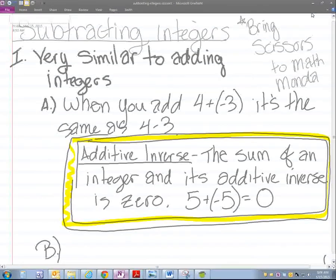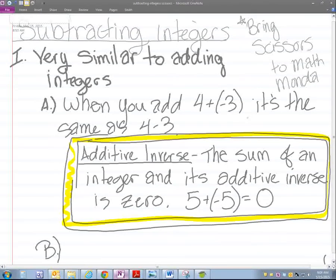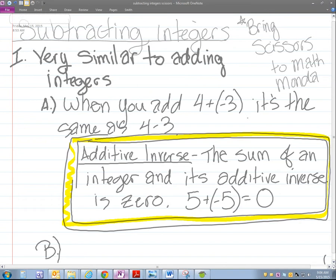For example, when you add 4 plus negative 3, it's the same as 4 minus 3. Then we had the additive inverse. The sum of an integer and its additive inverse is 0. For example, 5 plus negative 5 equals 0. So you can make all addition problems into subtraction.